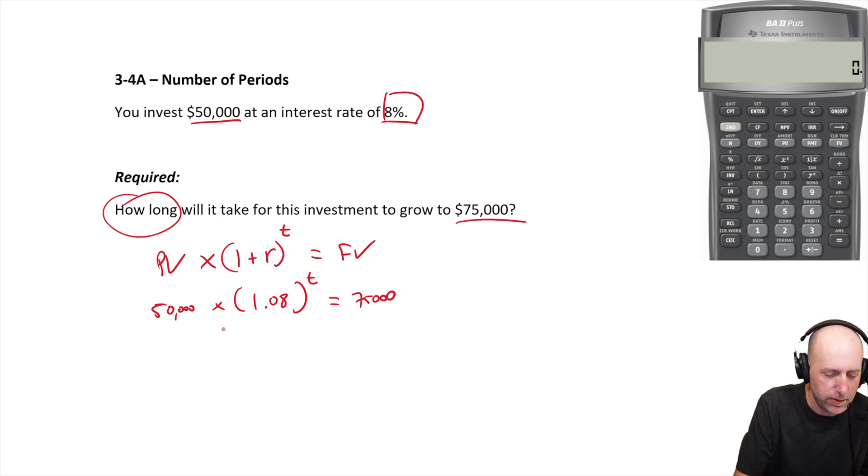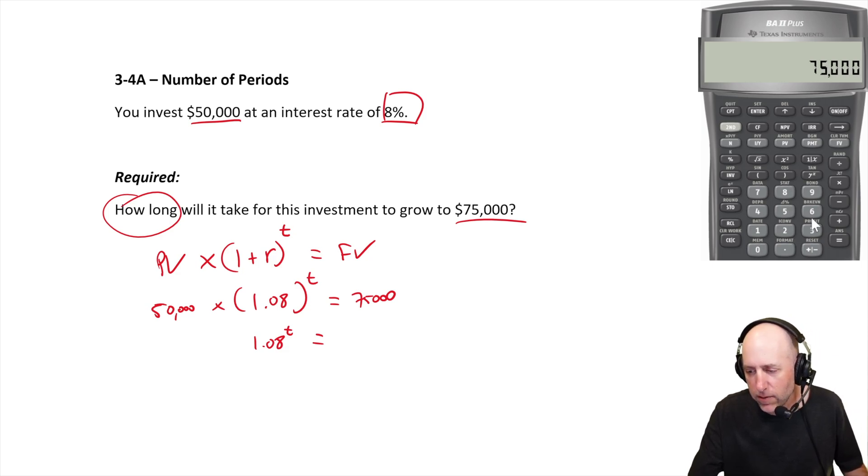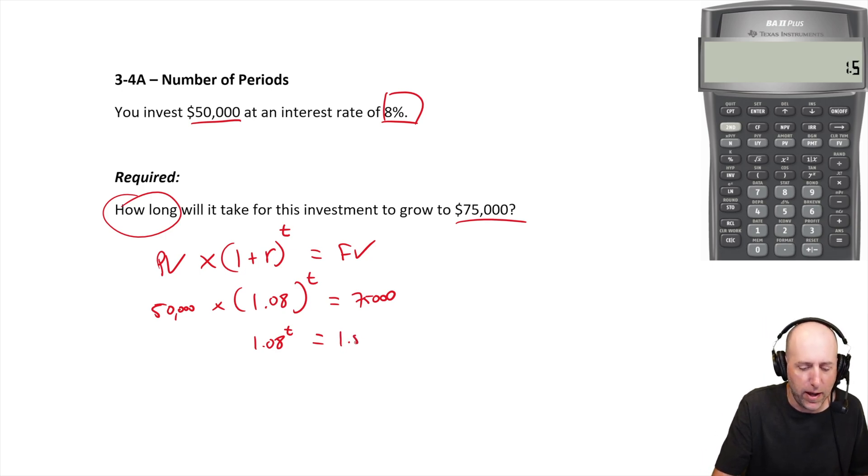I'll show you what trial and erroring to get our answer looks like. I'm going to divide both sides by $50,000 to get the $50,000 off this side. So I have 1.08 to the power of t equals 75 divided by 50, which equals 1.5.